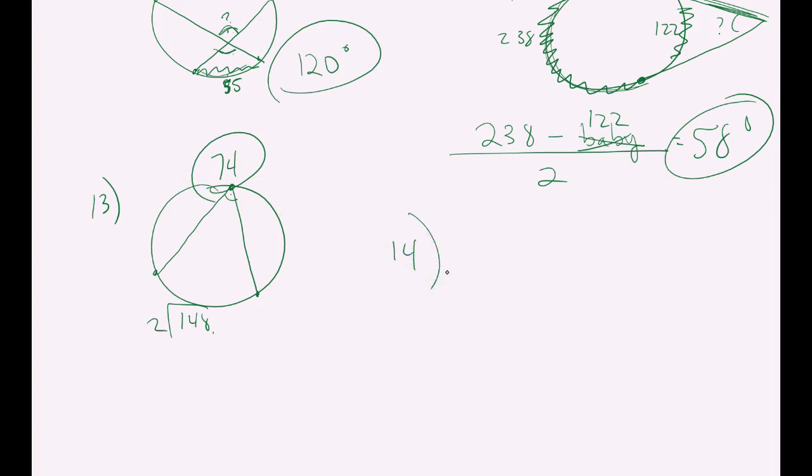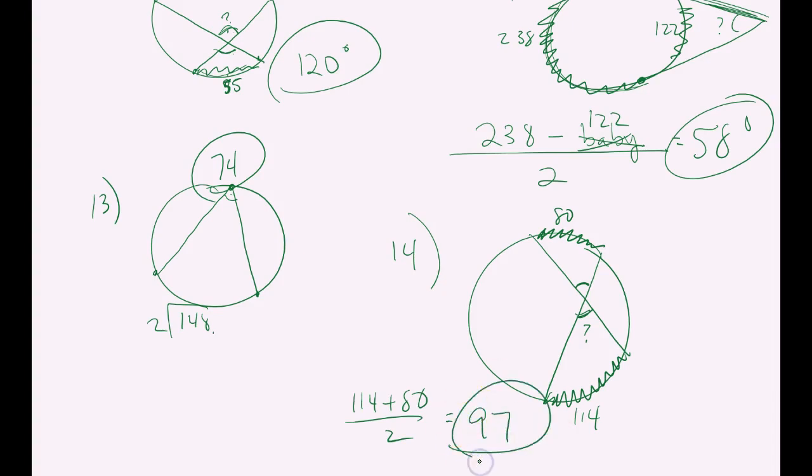And 14's the last one, and it's another one where they cross on the inside. Where did they put the angle? This is what they want. So if this is what they want, we need to be looking at these arcs. Did they label those for us? Yes, they did. This one is 80. This one is 114. And what do we do with these? We average them. So 114 plus 80 divided by 2. And when you do that, 114 plus 80 is 194. Divide that by 2. I'm getting 97. So that's what goes in there for that missing angle.